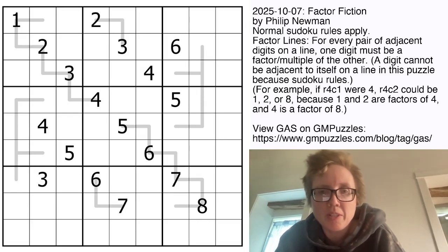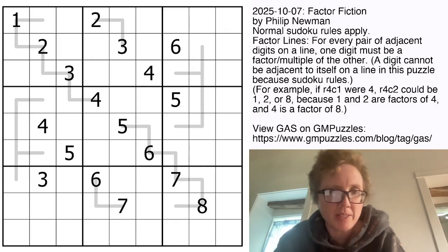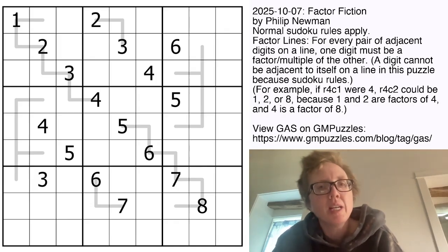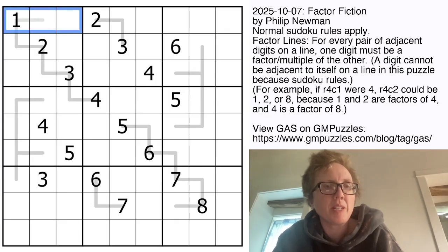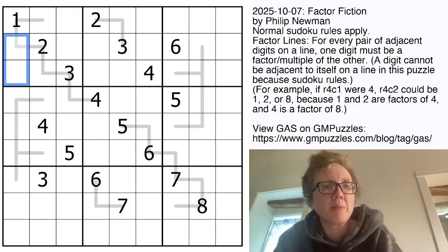Good morning, my friends. I'm Clover, and this is Genuinely Approachable Sudoku. Today we are solving Factor Fiction by Philip Newman. This is a factor line sudoku. We have standard sudoku rules replacing the digits 1 through 9, once each, in each row, each column, and each outlined 3x3 region.